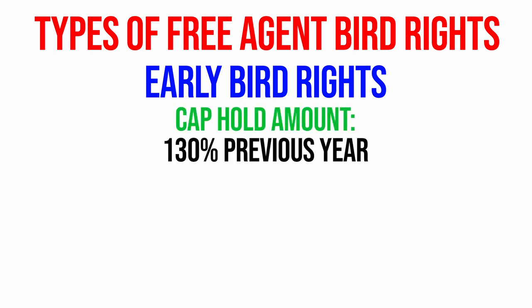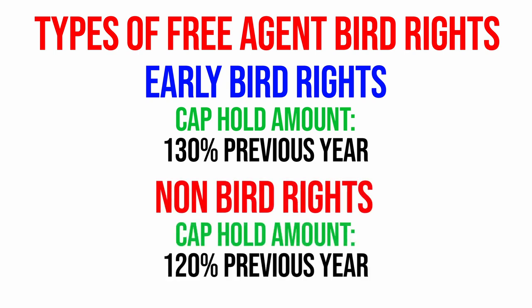Early bird free agents count as 130% of their previous year's contract, and non-bird free agents count as 120% of last year's contract as a cap hold. One exception is first round picks who did not have their third or fourth year options picked up — they're restricted to whatever that contract amount was going to be. For example, the Indiana Pacers traded for Jalen Smith, who did not have his third year contract picked up by the Phoenix Suns. He was supposed to make approximately 4.67 million, and that becomes the maximum the Indiana Pacers can offer him, so the cap hold would just be that amount.